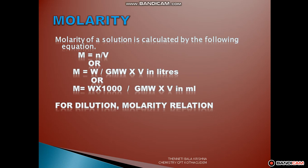For the dilution of a solution, the molarity relation is M1 V1 equal to M2 V2. Here M1 is the molarity of the concentrated solution, V1 is the volume of the concentrated solution, M2 is the molarity of the diluted solution, and V2 is the volume of the dilute solution.